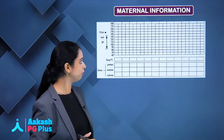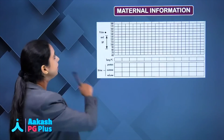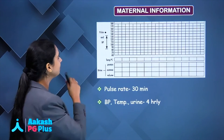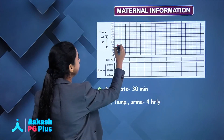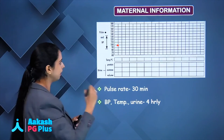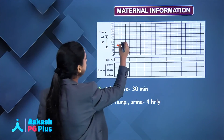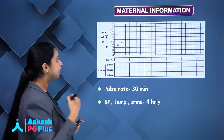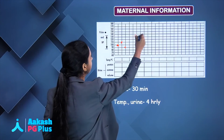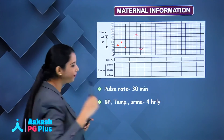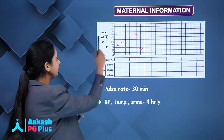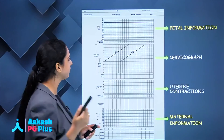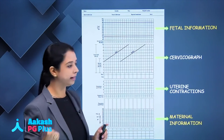Next, maternal information: pulse is plotted with a round circle every 30 minutes. BP — systolic and diastolic — is plotted every 4 hours. Temperature and urine are also plotted every 4 hours.